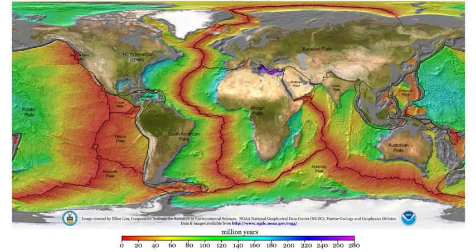Between the crust and the mantle is the Mohorovičić discontinuity. The seismic model of the Earth does not by itself determine the composition of the layers. For a complete model of the Earth, mineral physics is needed to interpret seismic velocities in terms of composition. The mineral properties are temperature dependent, so the geotherm must also be determined. This requires physical theory for thermal conduction and convection and the heat contribution of radioactive elements. The main model for the radial structure of the interior of the Earth is the Preliminary Reference Earth Model. The mantle is mainly composed of silicates, and the boundaries between layers of the mantle are consistent with phase transitions. The mantle acts as a solid for seismic waves, but under high pressures and temperatures it deforms so that over millions of years it acts like a liquid, making plate tectonics possible.